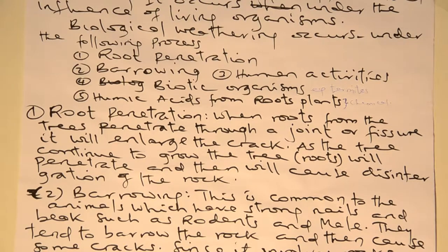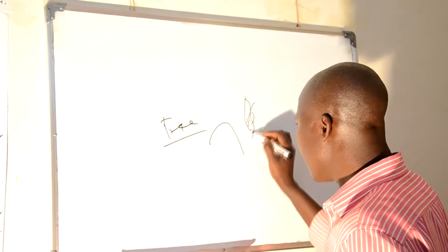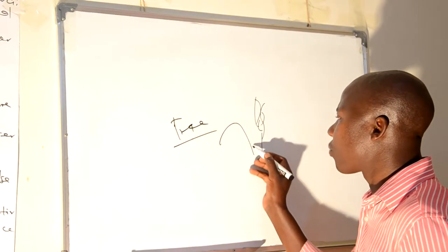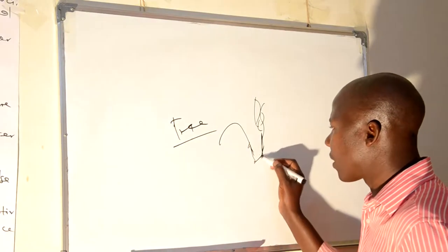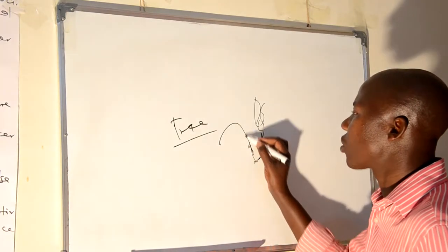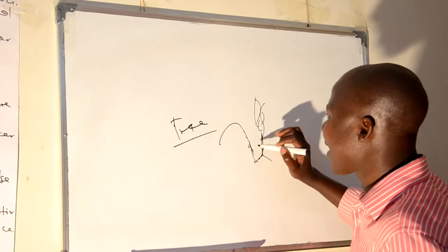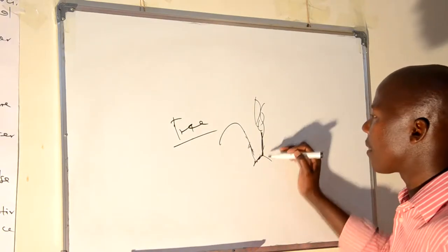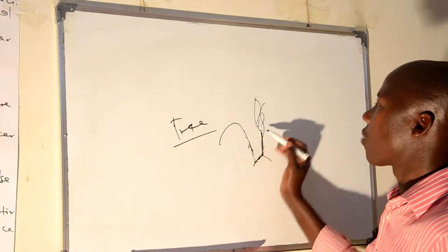For instance, if there is a plant or tree nearby a building or nearby a rock, wherever this tree grows, its roots will be penetrating and wherever they reach the rock or the surrounding area, the rock will be disintegrated or destroyed due to root penetration. If you see a tree nearby a house, you can observe a crack or fissure caused by root penetration.